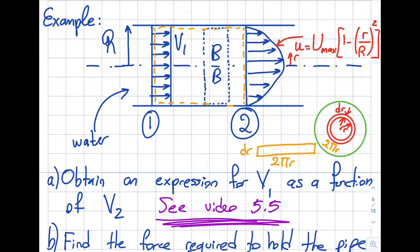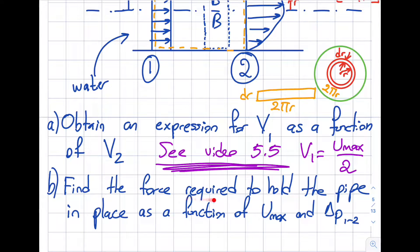Please see video 5.5 — it's a long question so I want to take a shortcut. I already demonstrated there that v1 = u_max / 2. You can see the maximum is about half of it. I'm going to pick that up from here. Step one is to read the question: find the force required to hold the pipe in place — as a function of u_max and the pressure drop between sections 1 and 2.